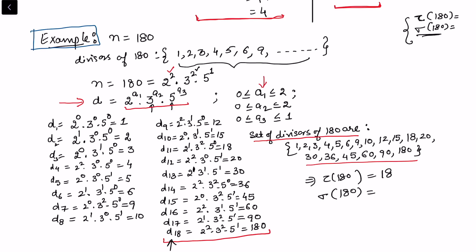From the divisor set we can compute sigma(180) by summing all these divisors. However, summation is more difficult than counting. We will now prove a theorem that gives us direct formulas for tau(n) and sigma(n) based on the prime factorization of n.